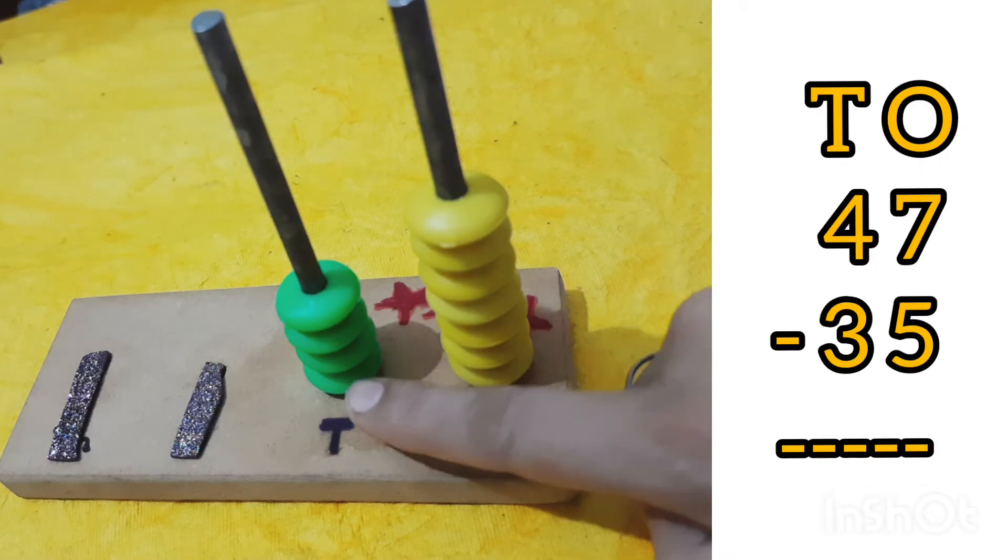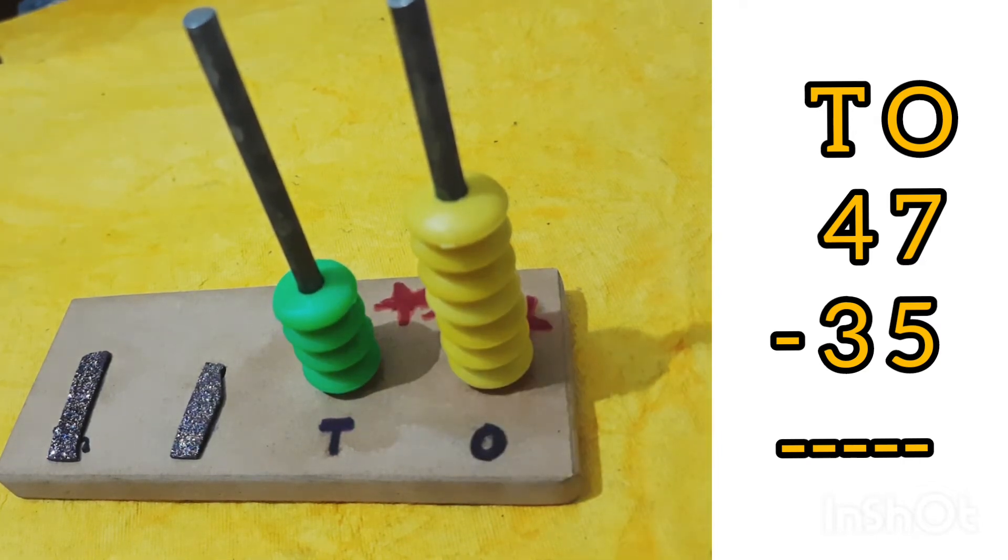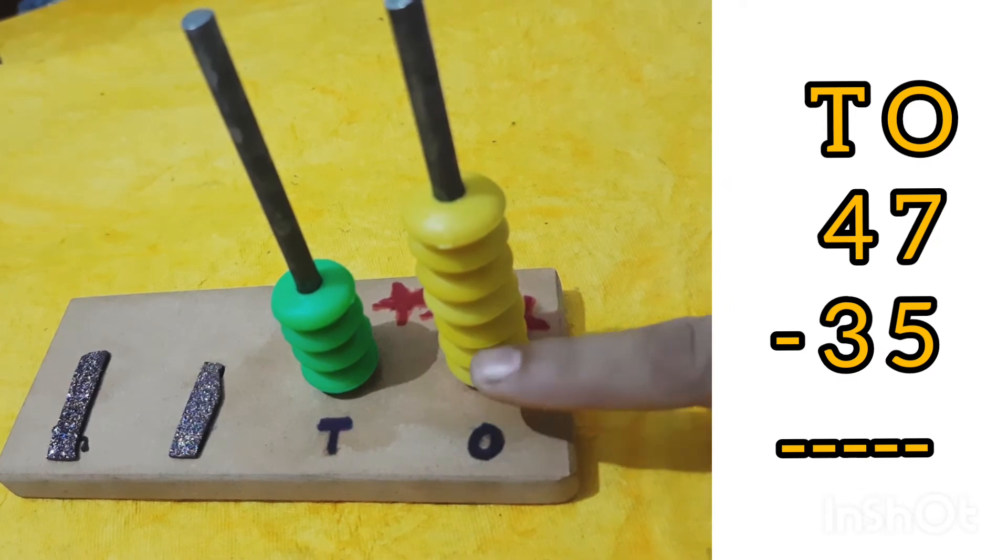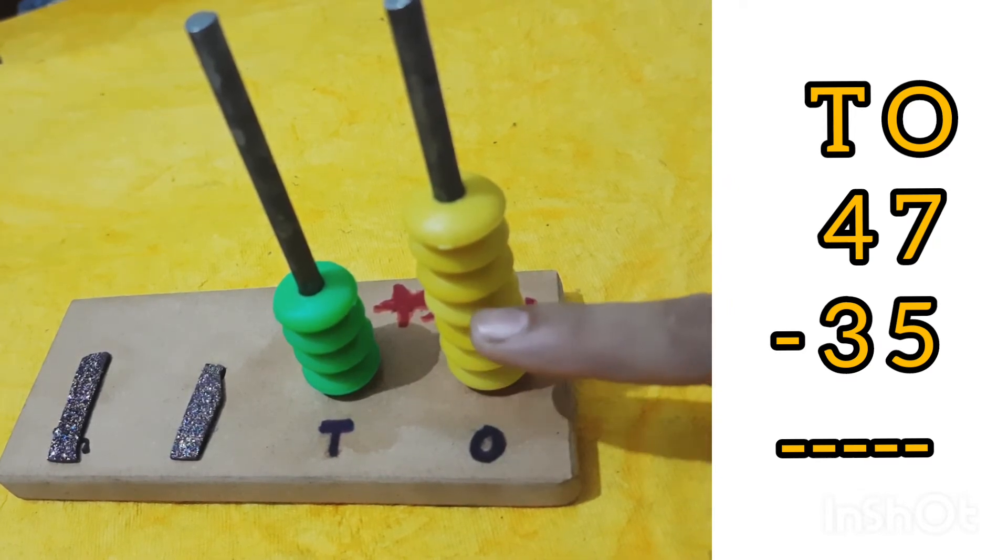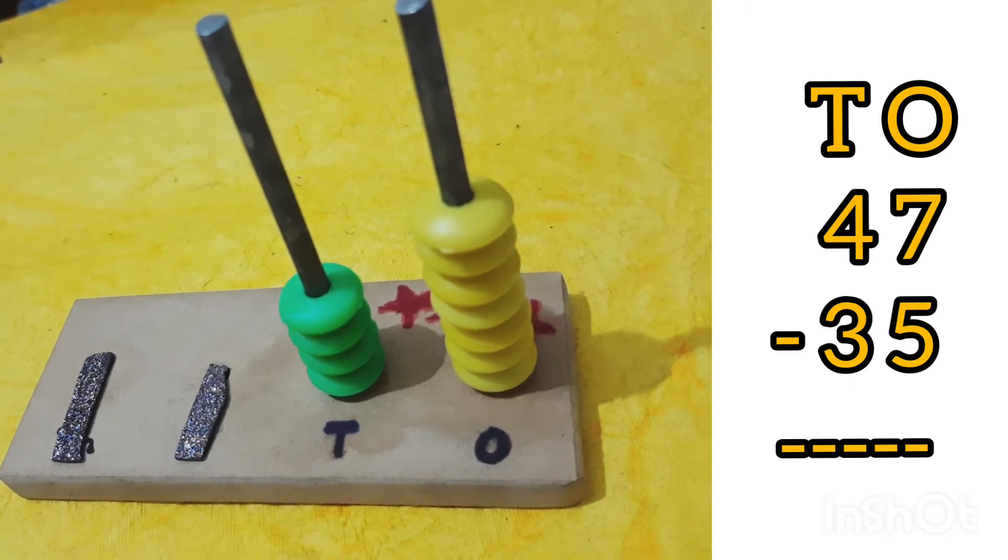In 47, 4 is at the tens place and 7 at the ones place. So I put 4 green beads at the tens place, and 1, 2, 3, 4, 5, 6, and 7 yellow beads at the ones place.